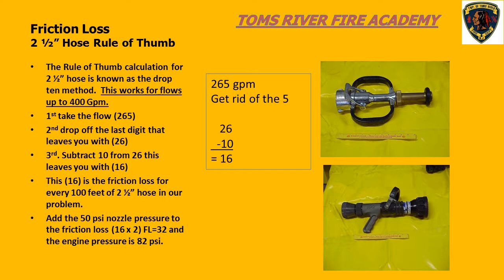This 16 is the friction loss for each 100-foot section of our 2.5-inch hose. We just add the nozzle pressure and friction loss together to get the required engine pump pressure. We have 200 feet of hose, so there is 16 PSI of friction loss in the first 100 feet and 16 PSI in the second 100 feet, giving a total friction loss of 32 PSI. Adding 32 PSI friction loss to the 50 PSI nozzle pressure gives a required engine pump pressure of 82 PSI.